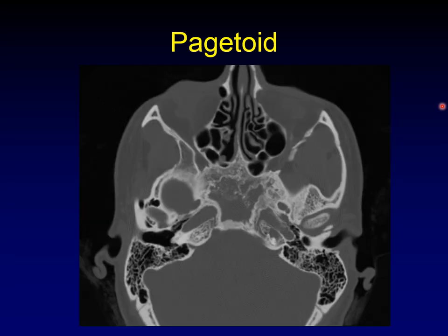The pagetoid form looks, as you have probably guessed, like Paget's disease — with a thickened cortex around the outside and a cystic central. It's important to understand that all three radiologic forms of fibrous dysplasia can appear in the same lesion. This combination of ground glass, cystic, and pagetoid appearance is often the best clue that you're dealing with fibrous dysplasia, although it is possible for any one of the three to appear all by itself.